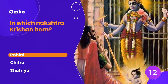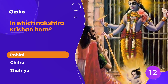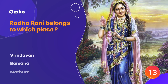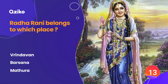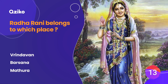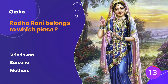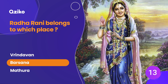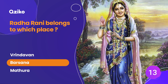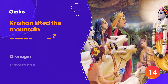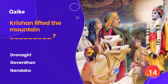In which nakshatra was Krishna born? The right answer is Rohini. Radha Rani belongs to which place? The right answer is Barsana. Krishna lifted the mountain — blank space.